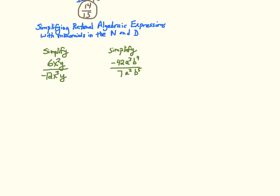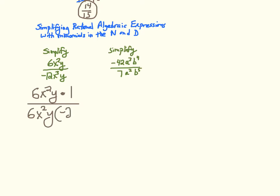If I have 6x squared y divided by negative 12x squared y, I want to identify the greatest common factor in the numerator and denominator. The greatest common factor is 6x squared y — that's the entire numerator, times 1. The denominator is 6x squared y times negative 2x. When I cancel out my greatest common factor, I'm left with negative 1 over 2x — it's customary to put the negative in the numerator or out front.